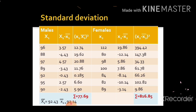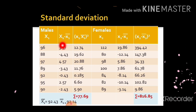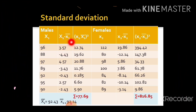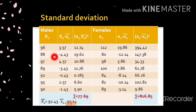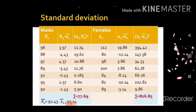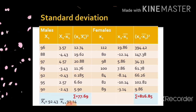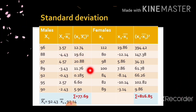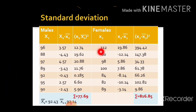We have plotted this in a table. The first column is for males — the values are listed, and the second column is X1 minus X1-bar. Since X1-bar is 92.43, subtracting 92.43 from 96 gives 3.57. Similarly, 88 minus 92.43 gives −4.43. The third column is (X1 − X1-bar)², so the square of 3.57 is 12.74. We calculated this for all values, and the Σ(X1 − X1-bar)² is 77.69. Similarly, for females we also calculated the values.